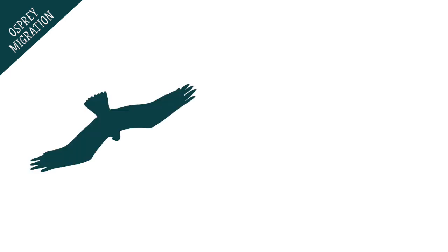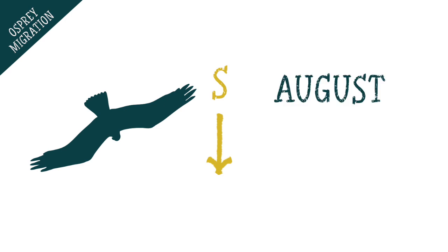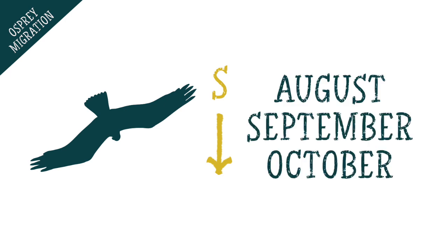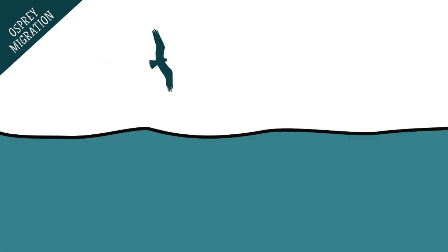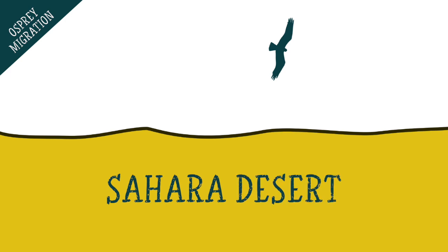Ospreys usually leave from the UK on their migration south during August, September and October at the end of the breeding season. They make these journeys alone, navigating their way to their wintering grounds. These journeys are difficult, especially for young and inexperienced ospreys having to fly long distances over huge amounts of water, and many even have to journey through the Sahara desert.